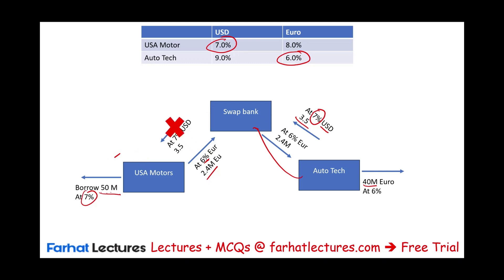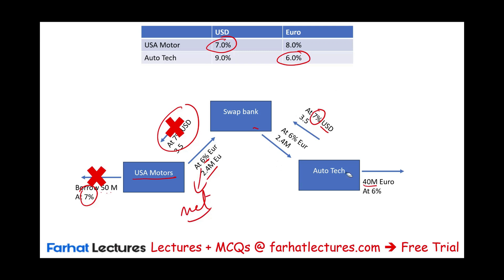Here's what happened overall. The US company pays 7% to the US bank but receives 7% from the German company, so the net they're paying is 6% in euros. The German company pays 6% to the European bank but gets 6% from the US company, so their net payment is 7% in USD. They also exchange the principal. The German company ends up paying a net 7% USD instead of 9% they'd have paid on their own, and the US company pays 6% EUR instead of 8% — everyone saves money and avoids foreign currency risk.